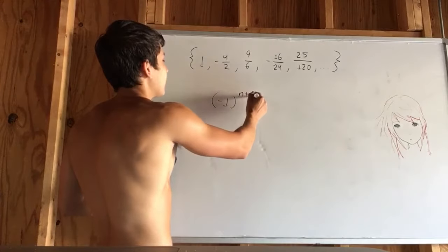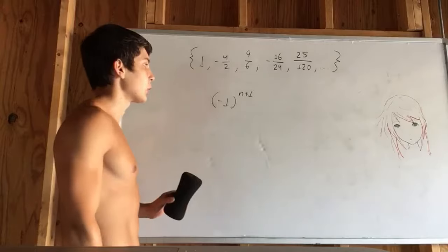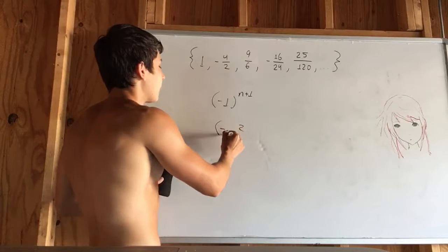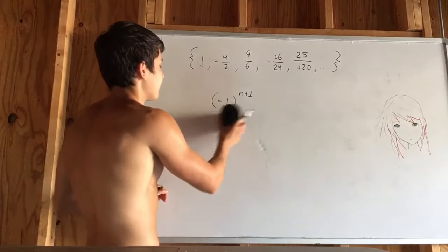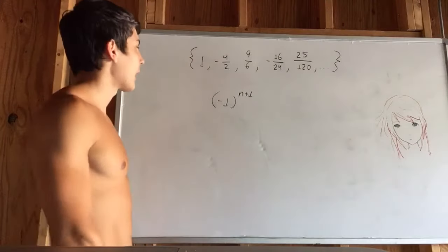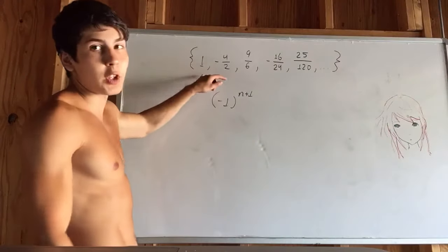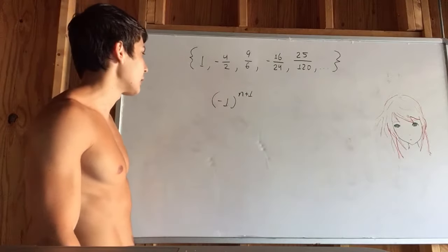So that's very easy to fix, just get n plus 1, now we have 2 in here as our exponent, and negative 1 to the power of 2 is going to give us a positive. Okay, so this is going to cause an alternation, and then we fix it based on whatever our first term actually turns out to be.